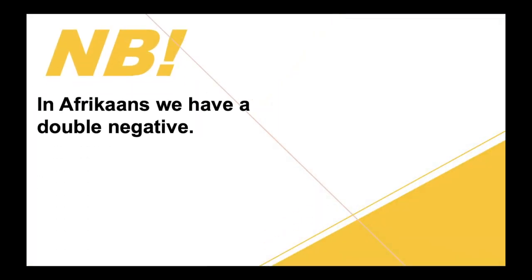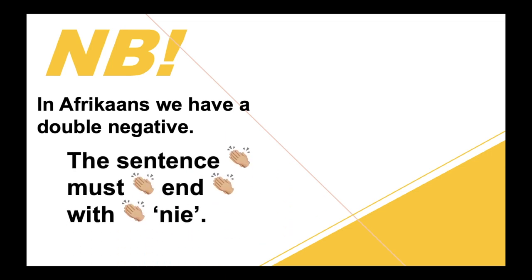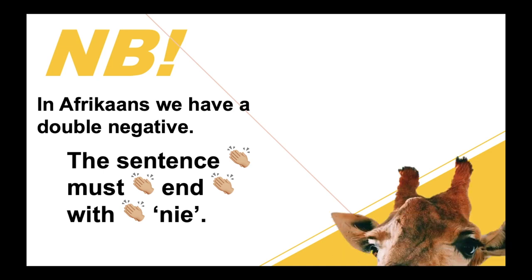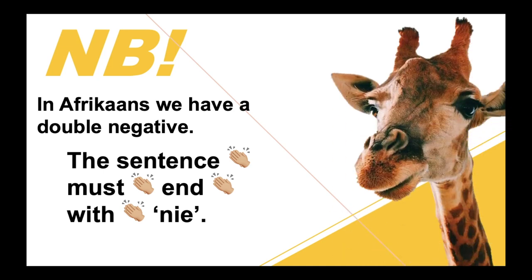So very important: in Afrikaans we have a double negative. This sentence must end with 'nie', so I added that in because it is important to remember. In English you only have the one negative — if you make it two negatives you're making it positive. In Afrikaans you would need three negatives to make something positive. So if you translate from English to Afrikaans and you say 'I am not tired', you would just say 'ek is nie moeg', but in Afrikaans a sentence has to end with 'nie', otherwise it is not a negative sentence.